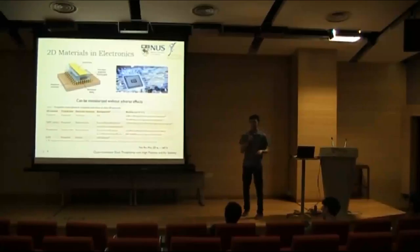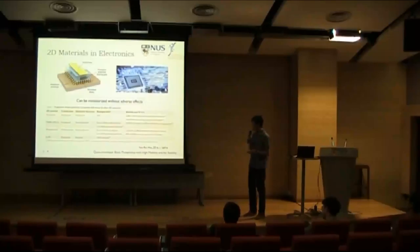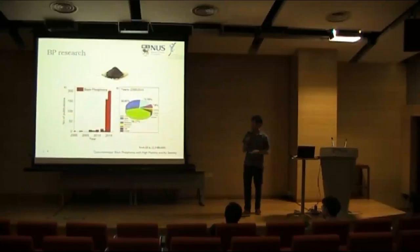And more recently, it has been theoretically predicted that phosphorene, which is a single layer of black phosphorus, have a high theoretical mobility of 10,000 to 26,000, which is pretty high. So actually, black phosphorus has been discovered for more than 100 years. But who knew that this powder of black dust can have such a high mobility when it's only a single layer? And that's why recently we can see a surge in the number of publications regarding black phosphorus.